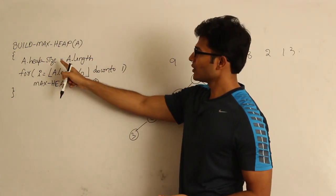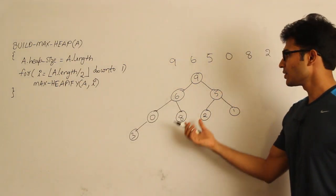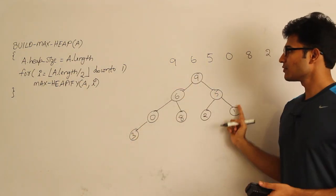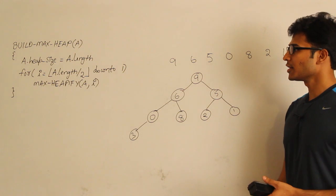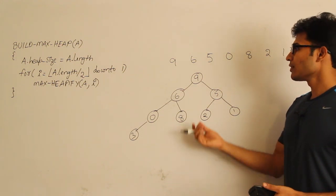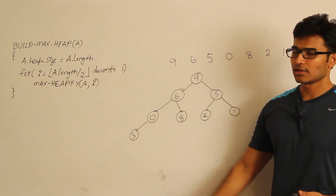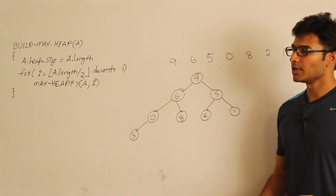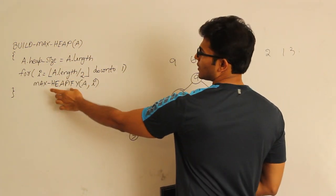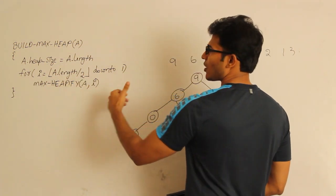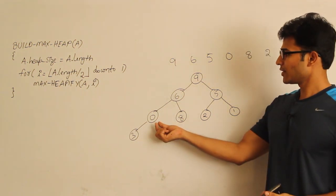Initially, a.heapSize is set equal to a.length. By the end of this procedure we are going to make a.heapSize equal to a.length. If there are eight elements, heap size is going to be eight. We always check max heapify to verify whether an element has a left child or not.